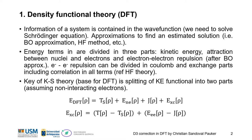In general, the energy terms are divided in three parts: the kinetic energy, the attraction between nuclei and electrons, and the electron-electron repulsion, after the Born-Oppenheimer approximation. This electron-electron repulsion can be divided, according to Hartree-Fock theory, into Coulomb and exchange parts, including correlation in these terms.